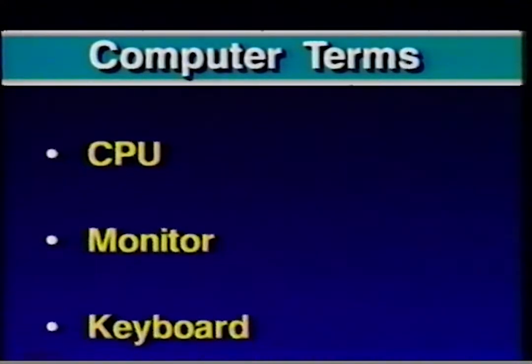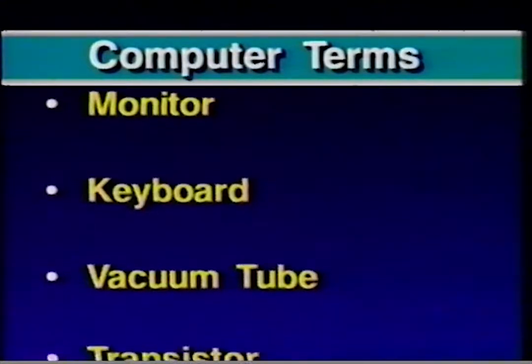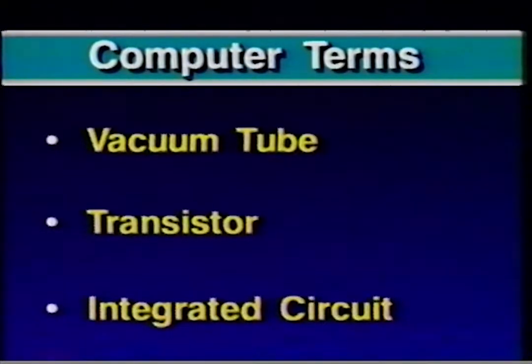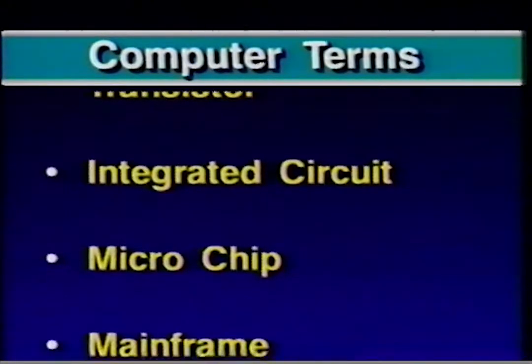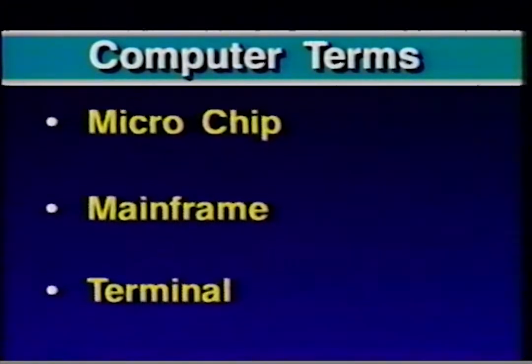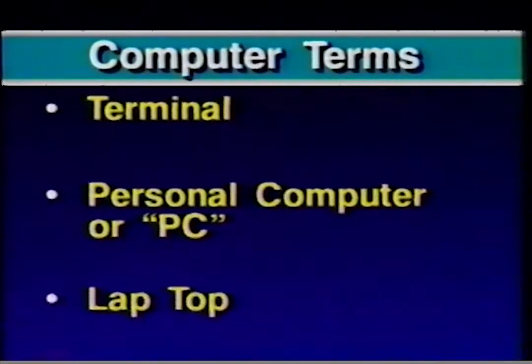In addition, you have learned many computer terms including CPU or central processing unit, monitor, keyboard, vacuum tube, transistor, integrated circuit, microchip, mainframe, terminal, personal computer or PC, and laptop. Expanding your computer literacy is surprisingly easy. You have already gained an understanding of the fundamentals that make all computers work. Once you have finished this computer literacy series, you will have the basic skills necessary to fully participate in the exciting and ever-expanding world of computers. The opportunity is yours.